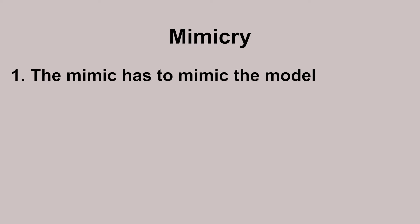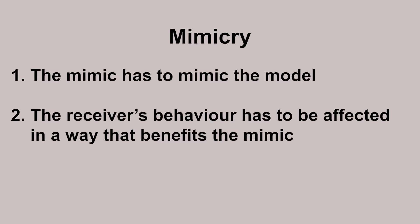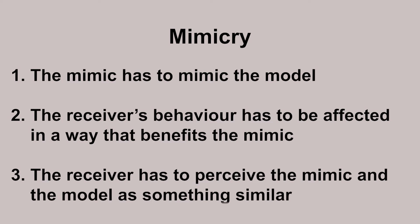For an occurrence to be called mimicry, the mimic has to mimic the model. The second condition is that the receiver's behavior has to be affected by the mimicking in a way so that the mimic receives a benefit. The third, which might be difficult to determine, is that the receiver has to perceive the mimic and the model as something similar. If there are no observable receivers, it will not be considered mimicry.